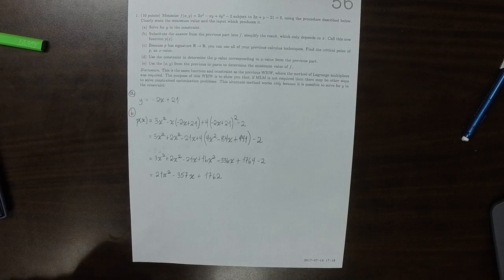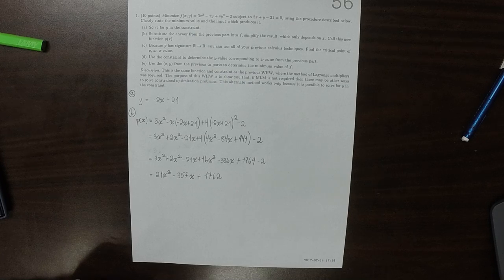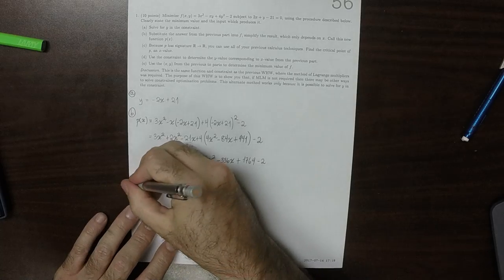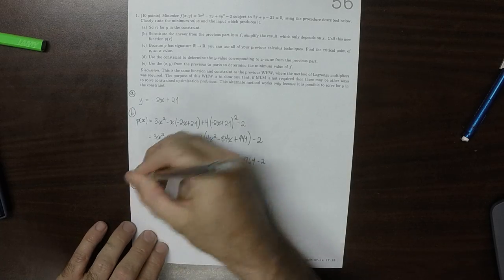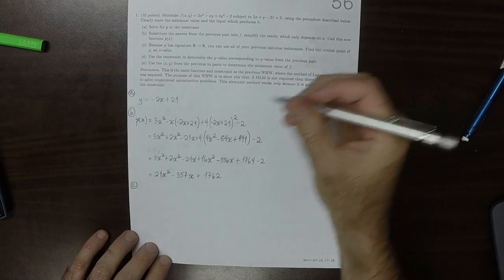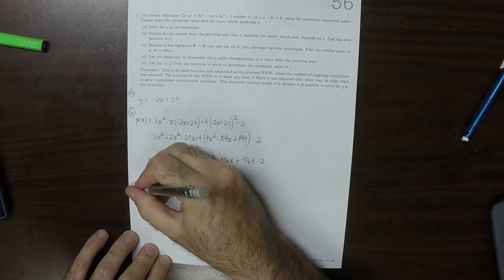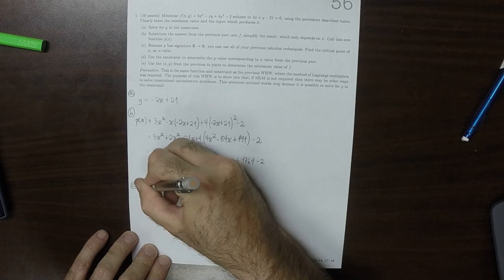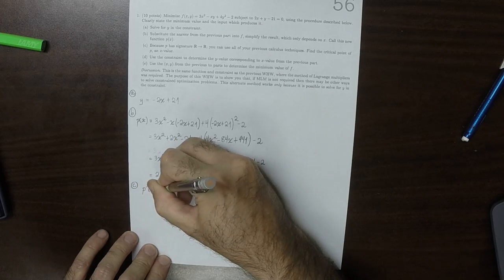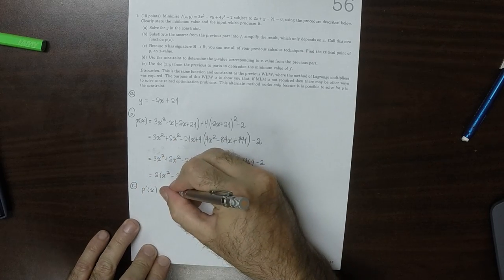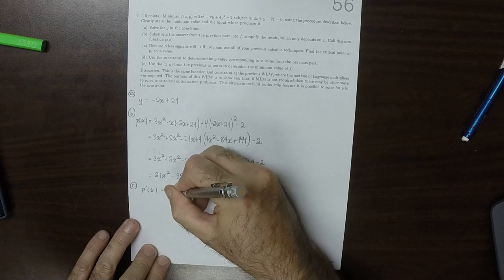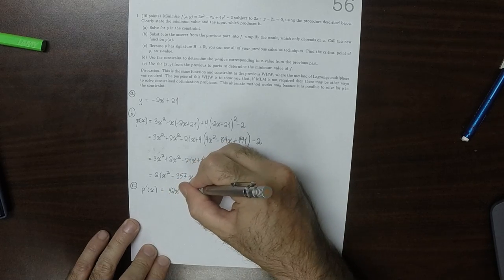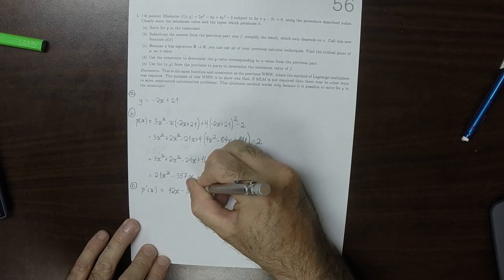So that's p of x. Part C, the critical point of p of x. So let's compute the derivative of p of x. So that would be 42x minus 357.